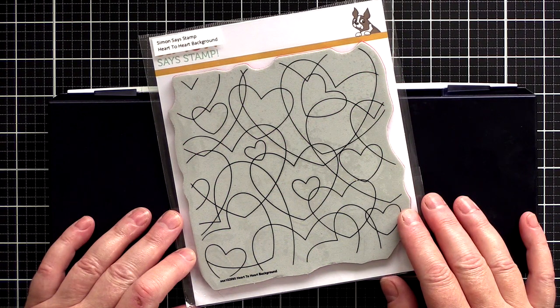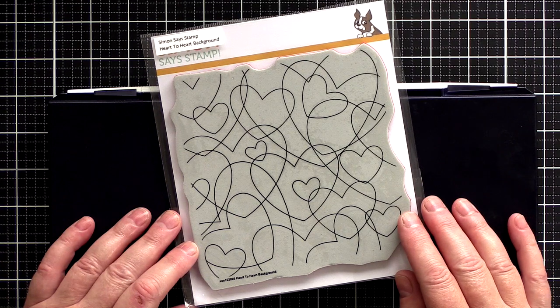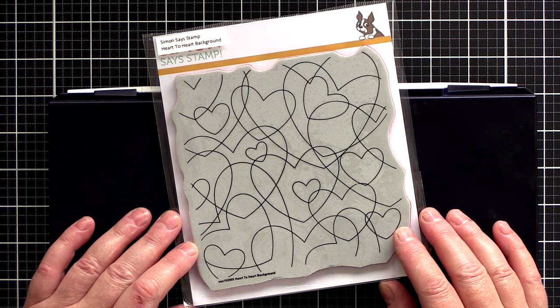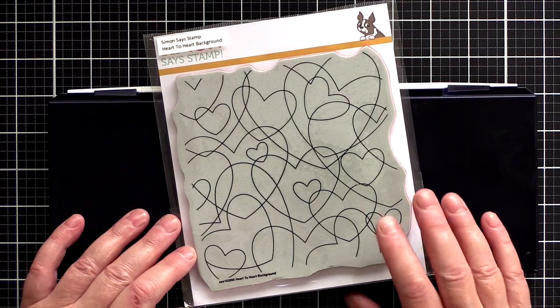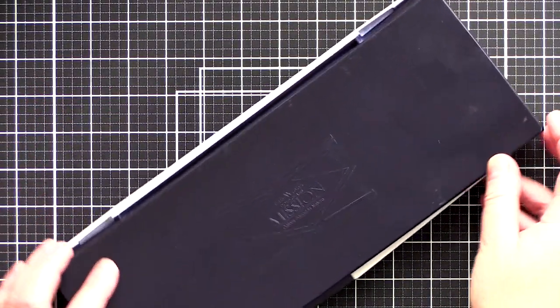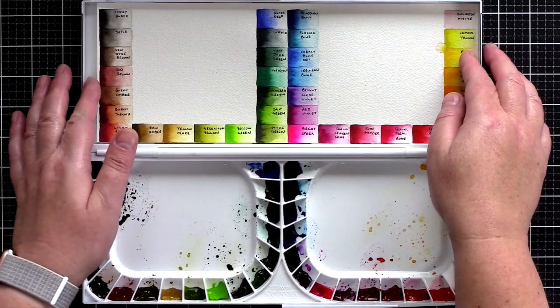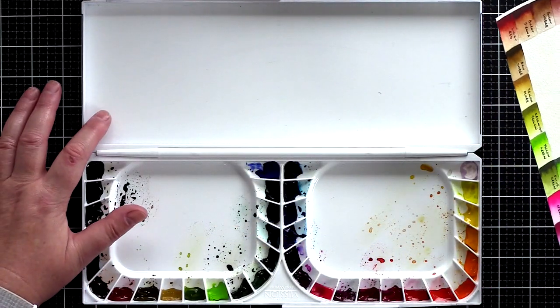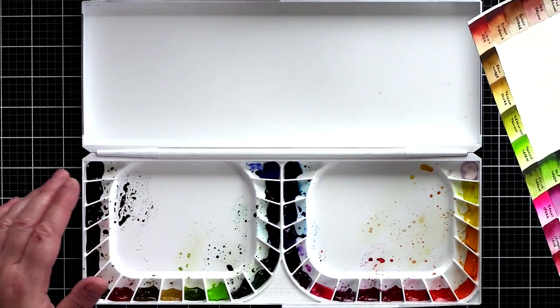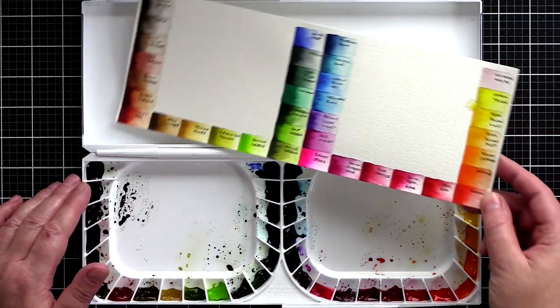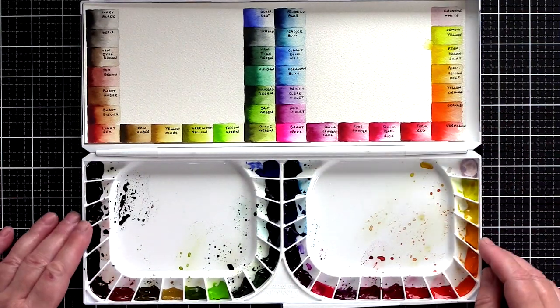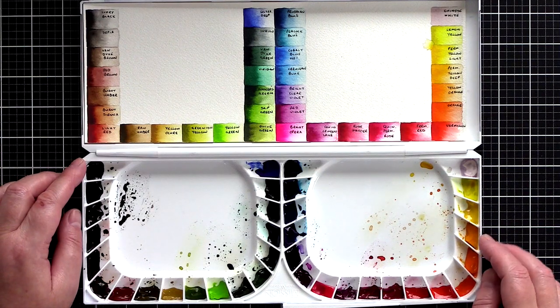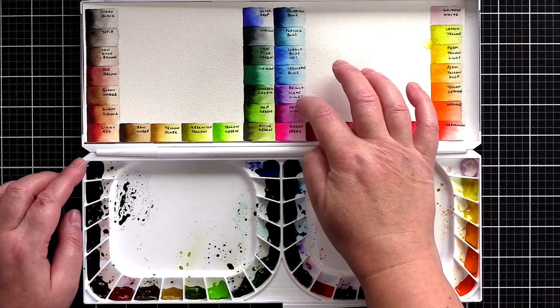I'll be using the heart to heart background stamp from Simon Says Stamp and while I get myself set up I want to apologize for my battered lockdown hands suffering from lots of hand washing, gardening and being covered in paint. I love Daniel Smith watercolors but I'm also enjoying exploring other watercolors and today I'll be using the Magella Mission Gold Watercolour Set. I squeezed the tube paint into the wells of the palette and created a swatch chart so I can easily find the colors I want to use.